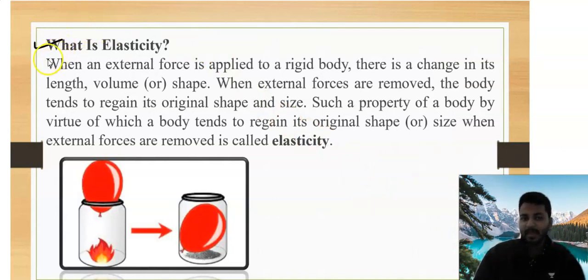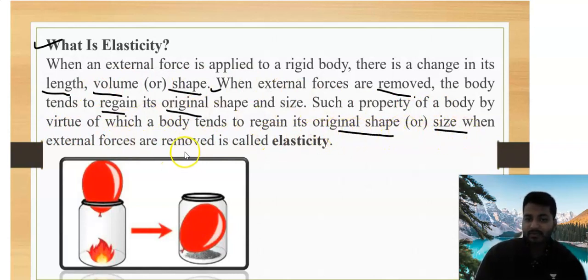What is elasticity? When an external force is applied to a rigid body, here we consider only rigid body. We do not discuss about liquid or air molecules at that time in diploma physics. There is a change in its length, volume or shape when applying external force. And after applying external force, if we remove it, then the body tends to regain its original shape and size. Such property of a body by virtue of which body tends to regain its original shape or size when external force is removed is called elasticity.